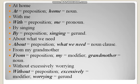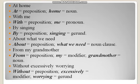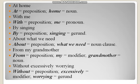Here are examples describing those patterns. 'At home' — 'at' is a preposition, 'home' is a noun. 'With me' — 'with' is a preposition, 'me' is a pronoun. 'By singing' — 'by' is the preposition, 'singing' is a gerund. 'About what we need' — 'about' is a preposition, 'what we need' is a noun clause, because it is acting as a noun and a clause always has a subject and verb in it.